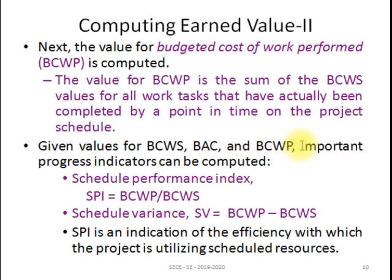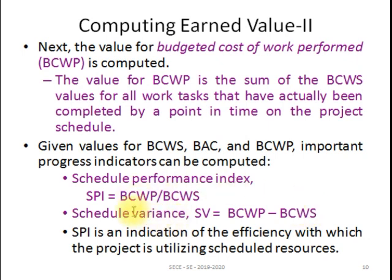Given the values of BCWS, BAC, and BCWP, we calculate the Schedule Performance Index (SPI). SPI is the ratio of BCWP divided by BCWS — the ratio of budgeted work performed to budgeted work scheduled. This ratio gives the Schedule Performance Index. We also find the Schedule Variance (SV), which is the difference between work performed (BCWP) and work scheduled (BCWS). This difference gives the schedule variance.